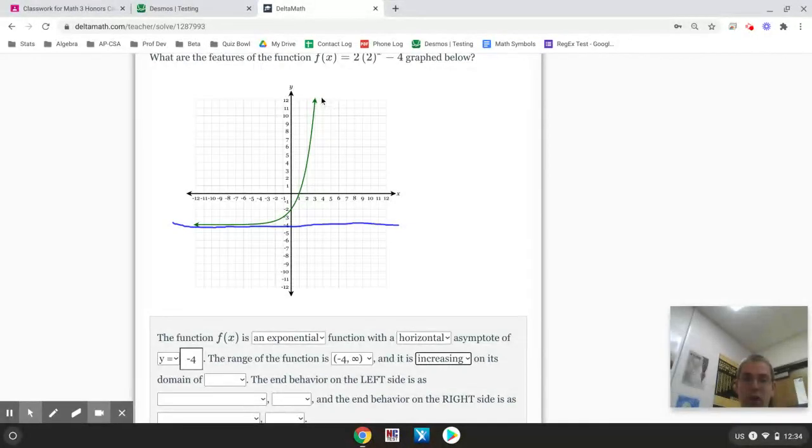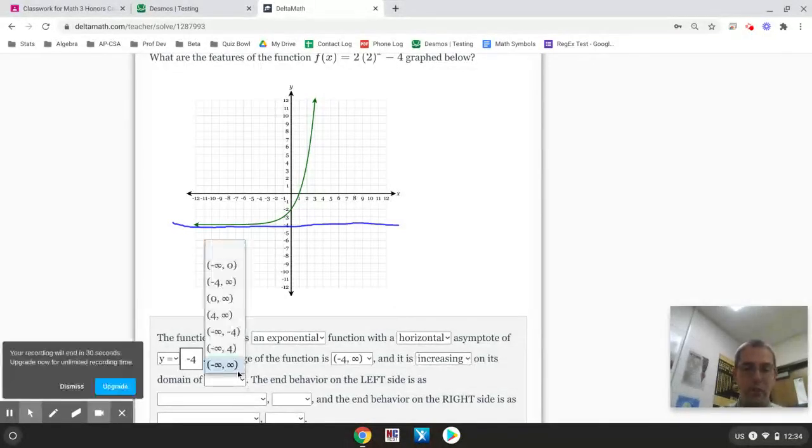It kind of levels off. But if it kept going, it would continue to go and eventually be off the screen. But it's always increasing. There is no asymptote. So, it always increases. So, there is my domain.